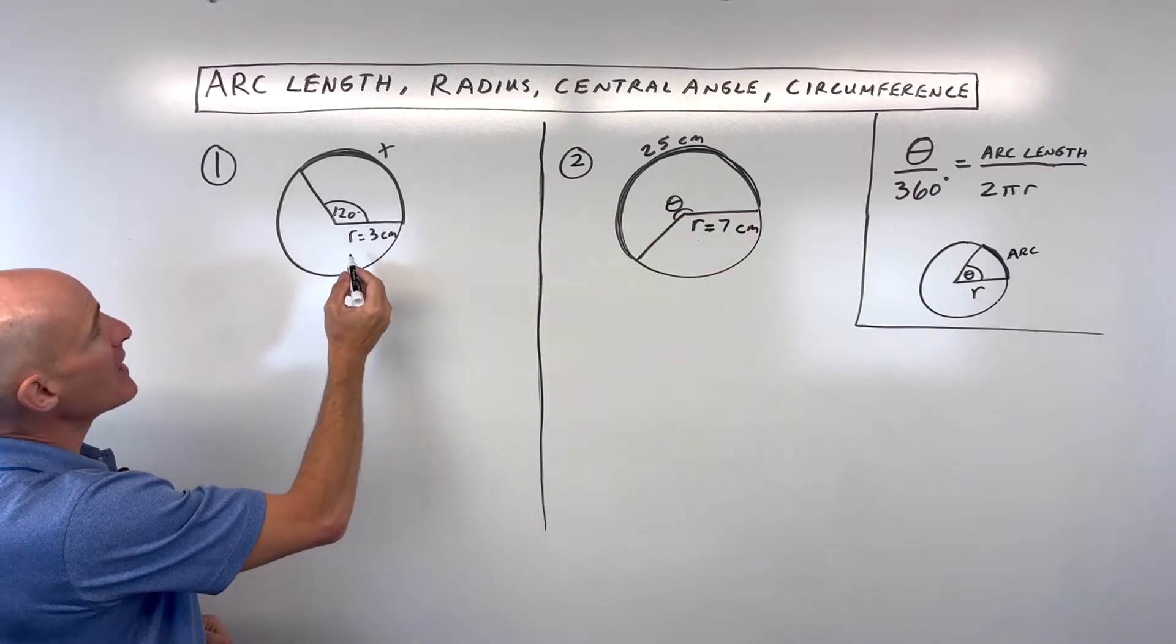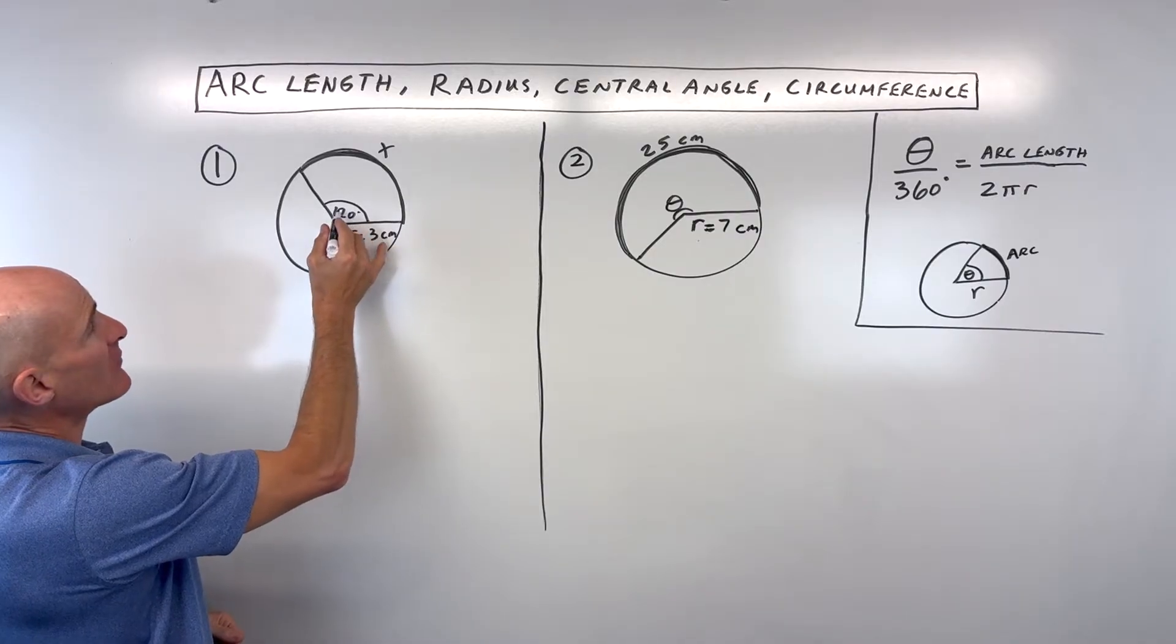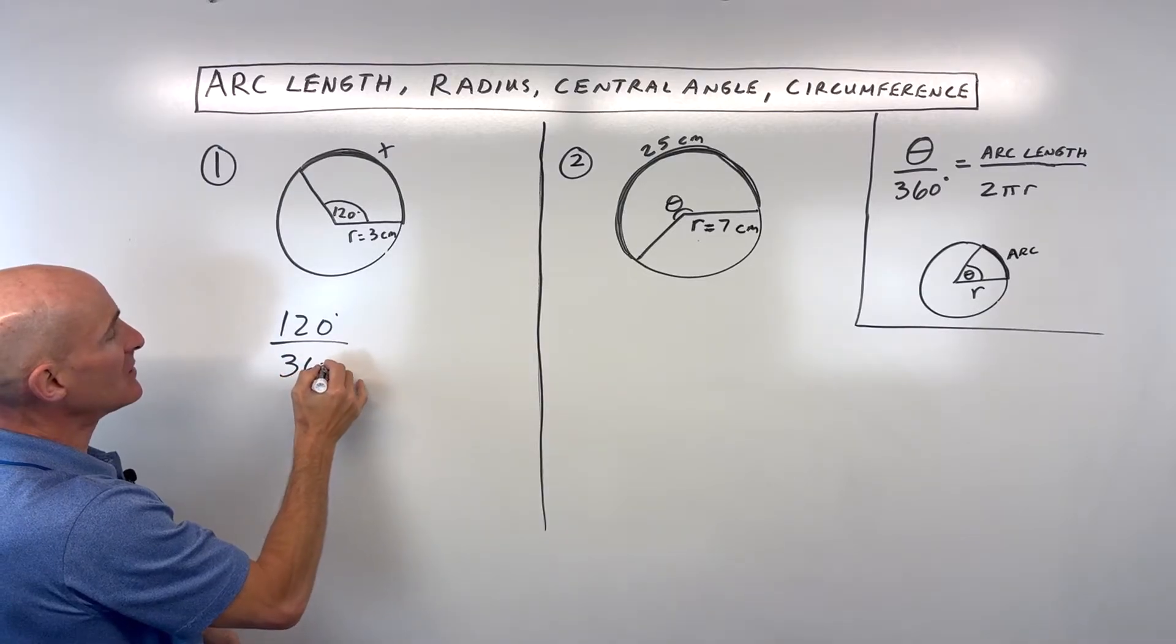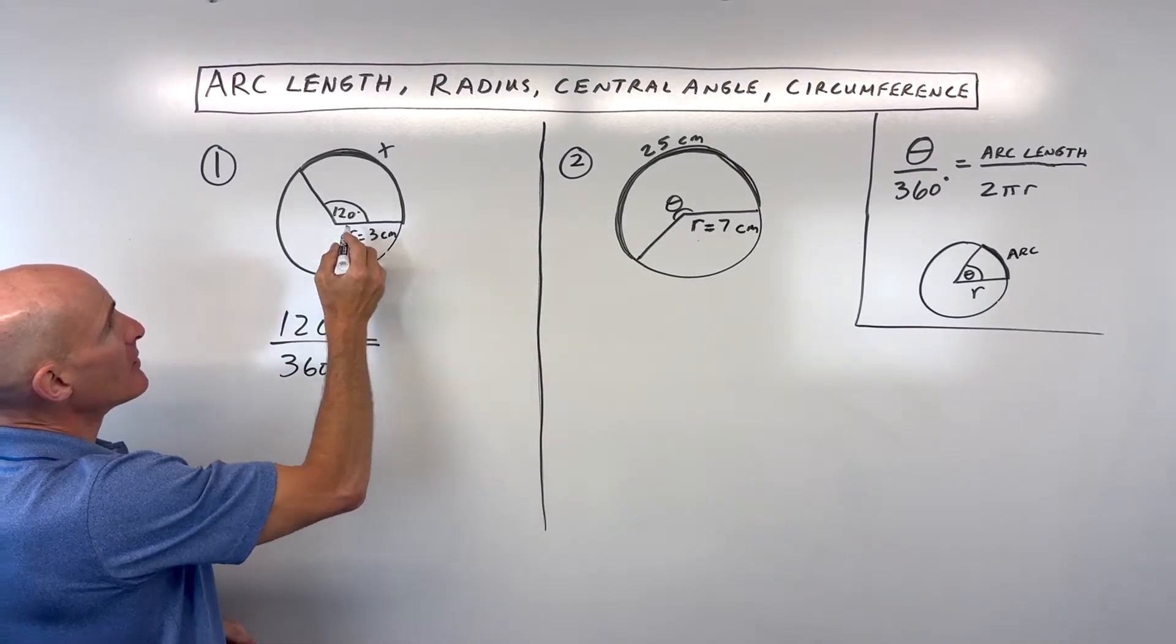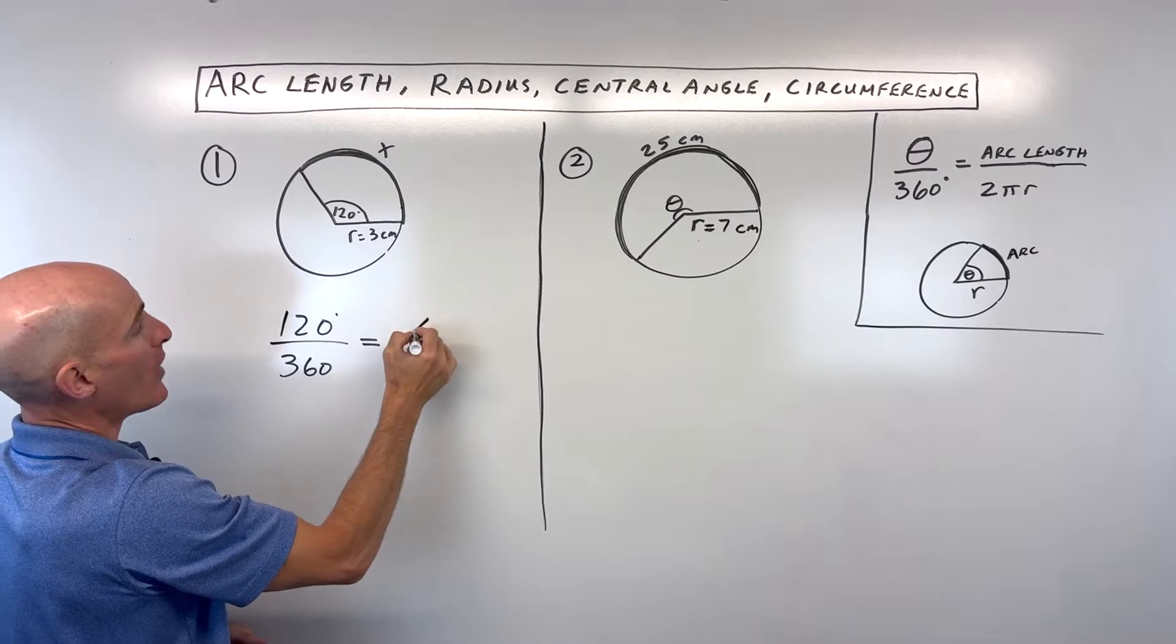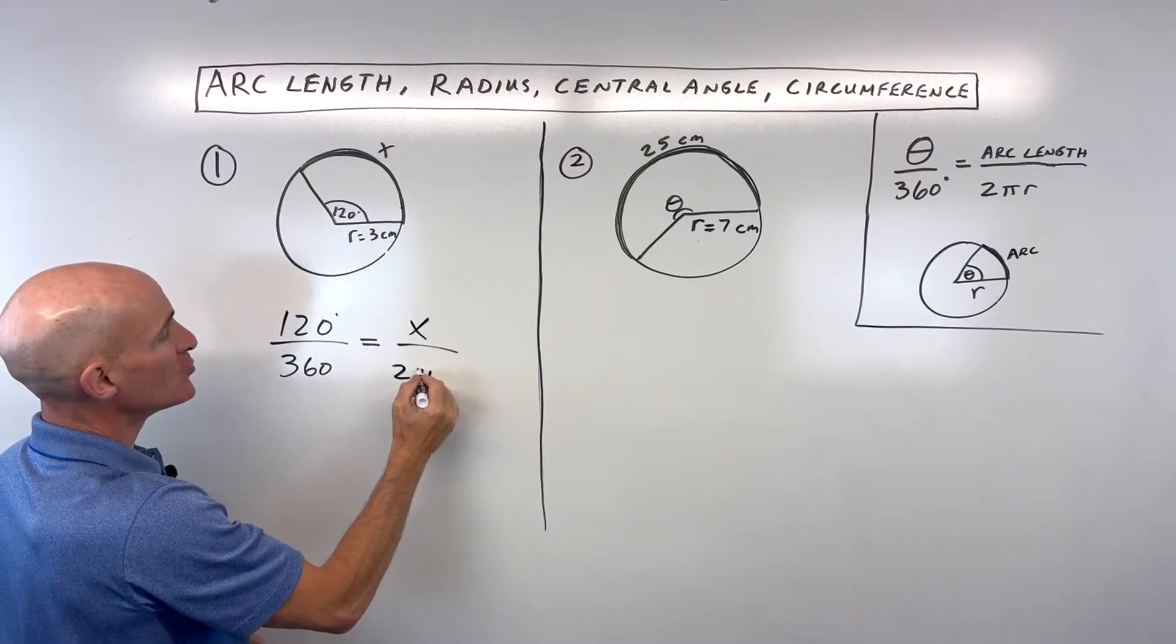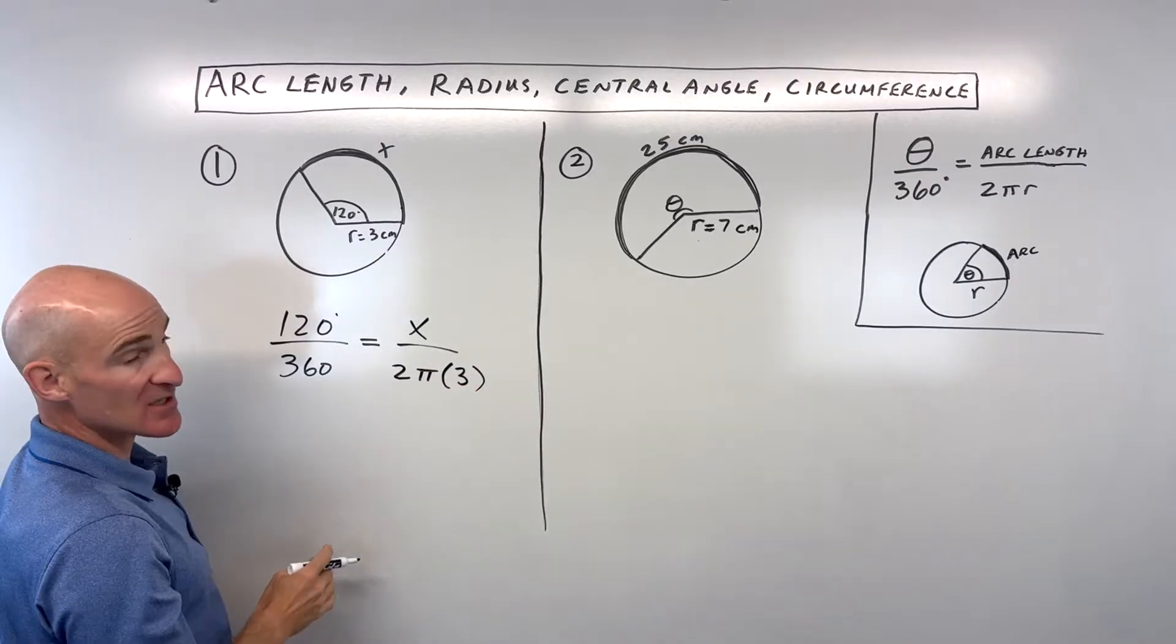In this first one, we can see that we have a central angle of 120 degrees. So, I'm going to say 120 degrees divided by 360 equals the arc length, which we don't know, x, to the whole circumference, which is 2π times the radius, which in this case is 3.